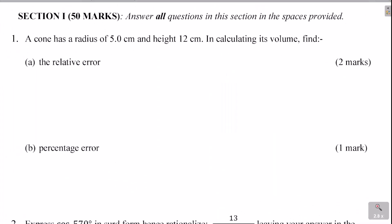A cone has a radius of 5.0 centimeters and a height of 12 centimeters. In calculating its volume, find: A, the relative error, and B, the percentage error.